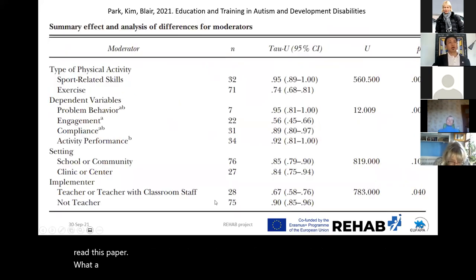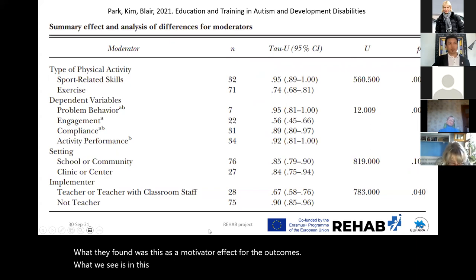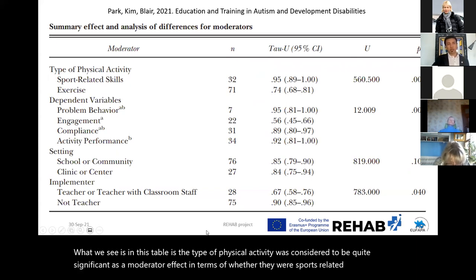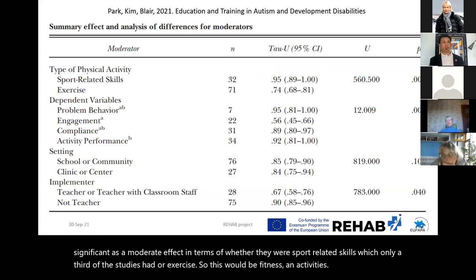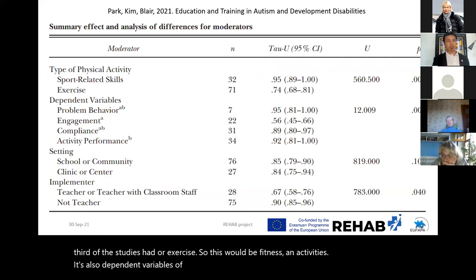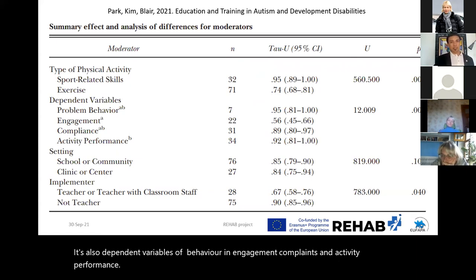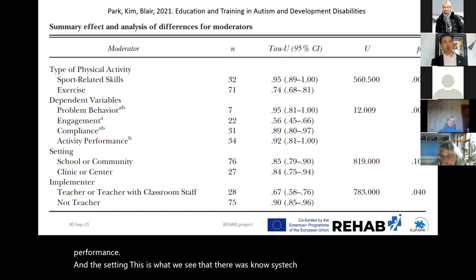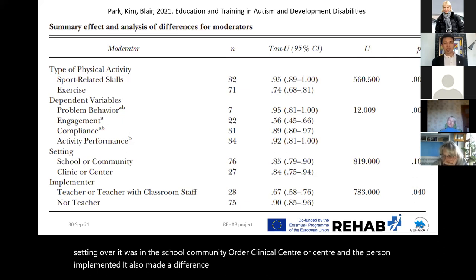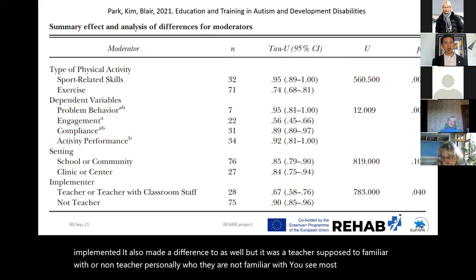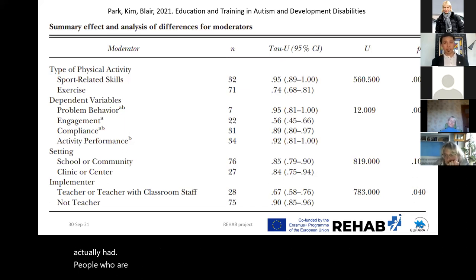What they found as a moderator effect was that the type of physical activity was quite significant — whether sport-related skills or exercise. The dependent variables of problem behaviour, engagement, compliance, and activity performance also mattered. The setting showed no significance — no evidence that school, community, or clinic was better. The person who implemented the intervention also made a difference — whether it was a teacher (a familiar person) or a non-teacher. Most studies actually had non-teachers providing the intervention.